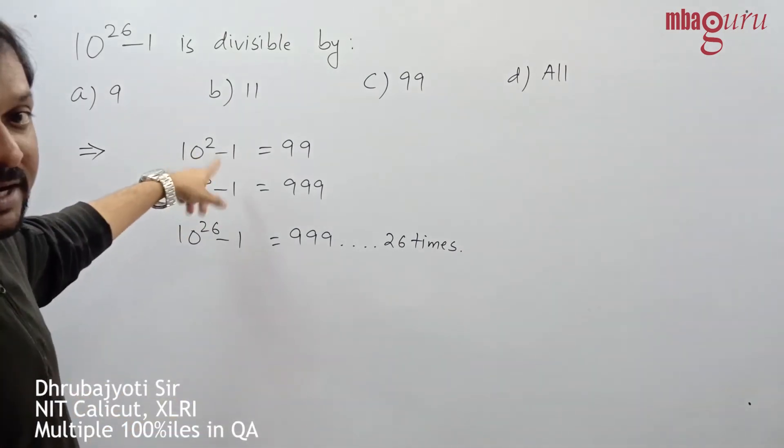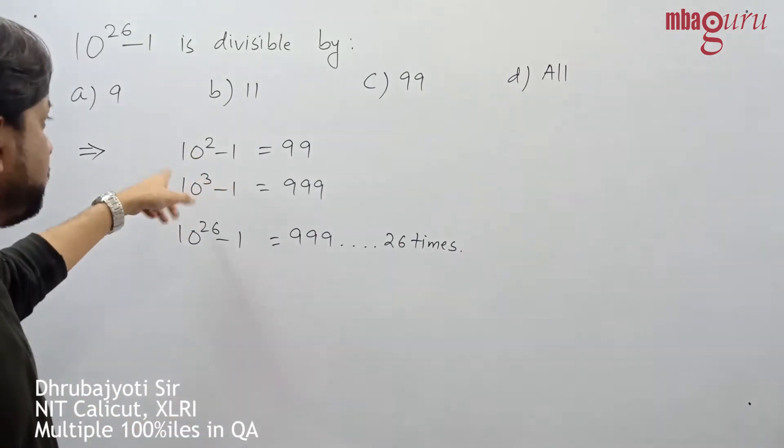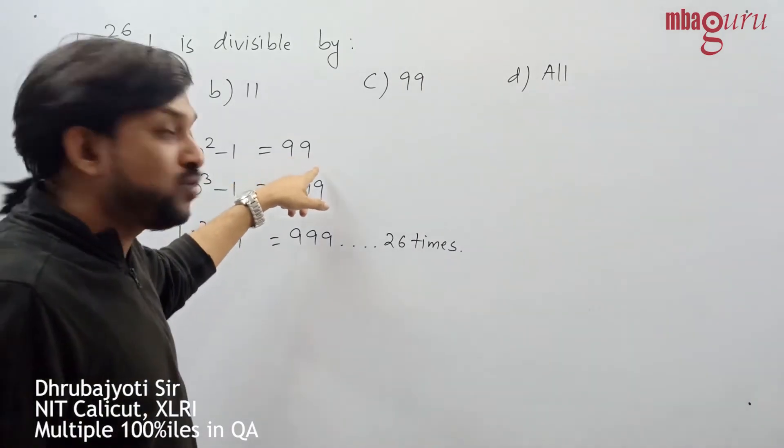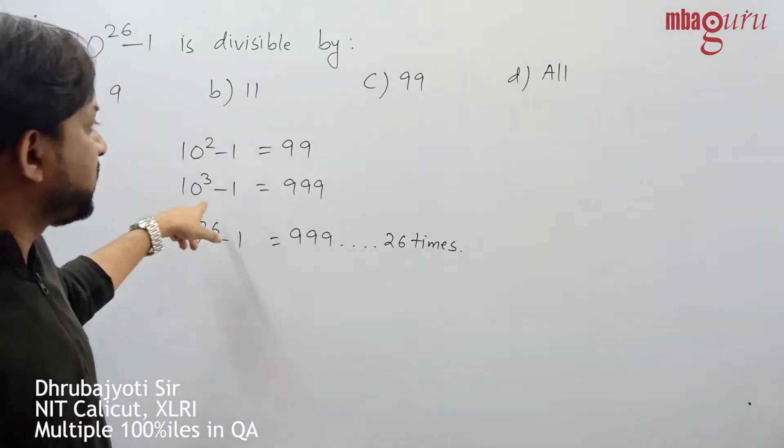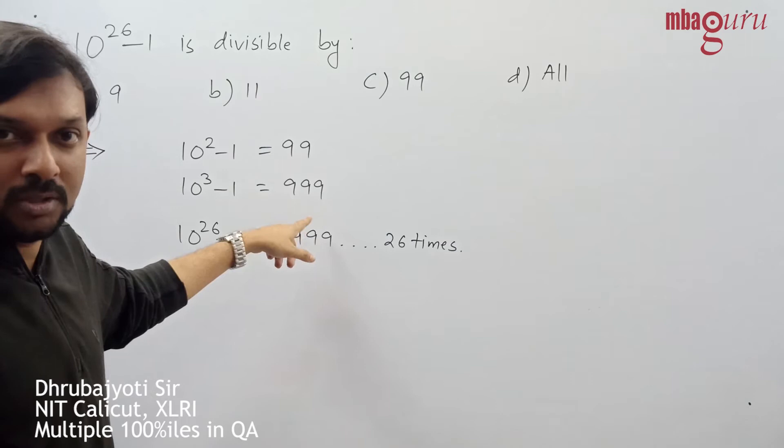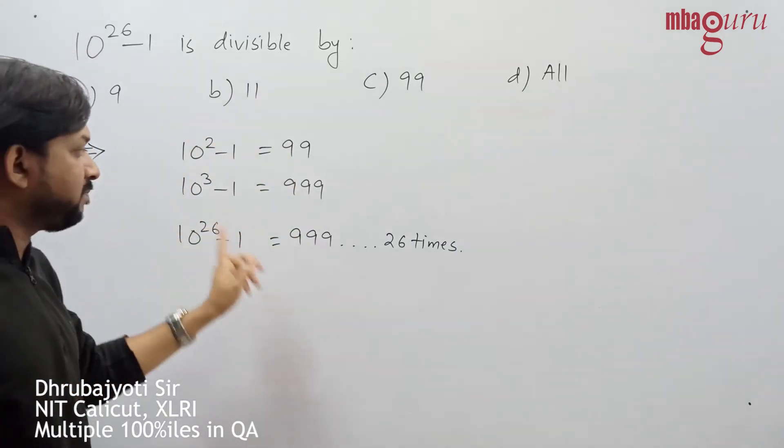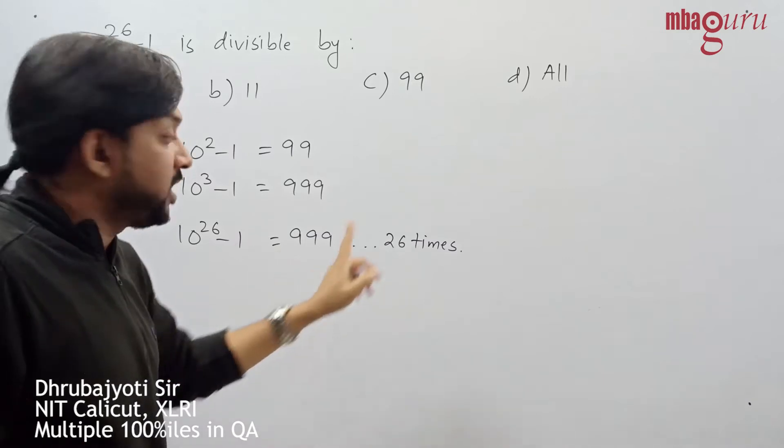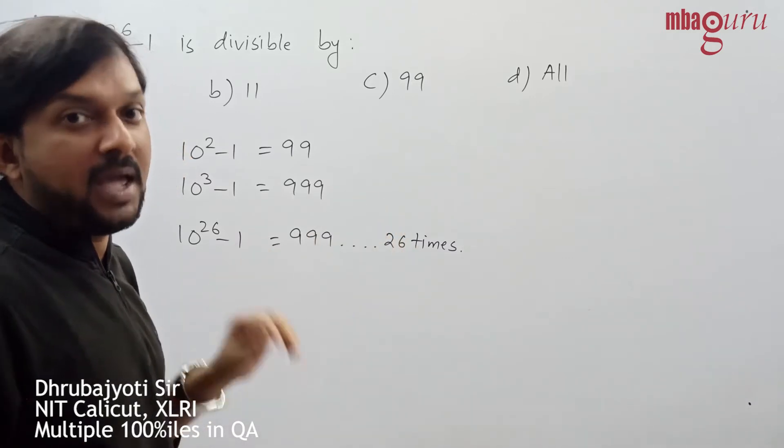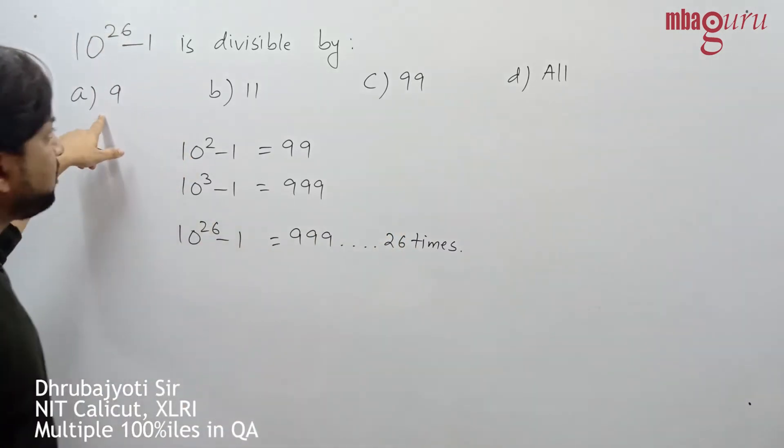If you observe, 10^2 - 1 has two 9s, and 10^3 - 1 has three 9s. So 10^26 - 1 is nothing but a number comprising 9s twenty-six times. Therefore, obviously, the number is divisible by 9.